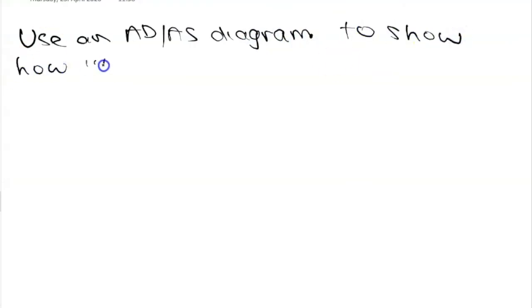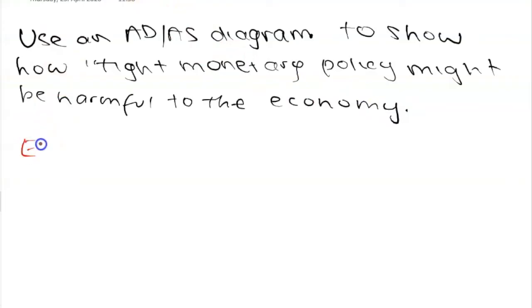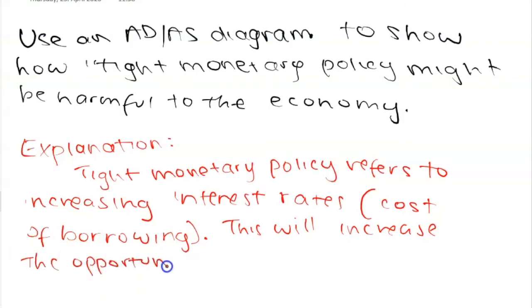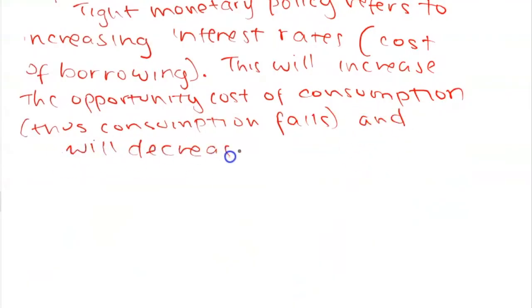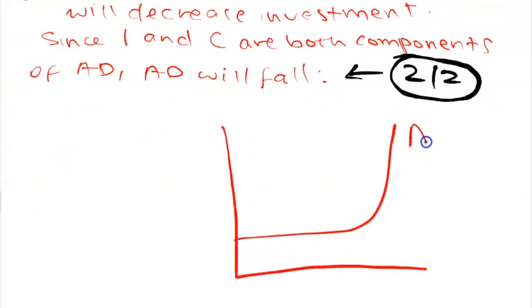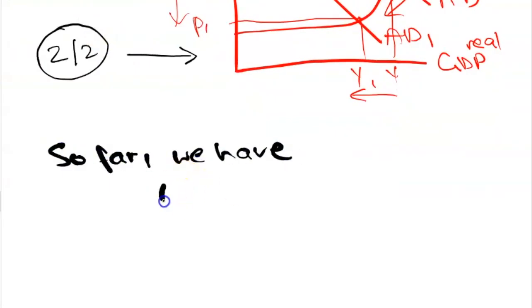The next four mark question asks us to use an ADAS diagram to explain how a decision to tighten monetary policy might be harmful to the economy in paragraph 7. First, you have to understand that to tighten monetary policy is contractionary monetary policy, in other words, to increase interest rates. You also have to understand that interest rates is the cost of borrowing or the opportunity cost of consumption. For your explanation, you would explain that this will increase interest rates, therefore decrease consumption and investment, both of which are components of AD, and therefore shift AD to the left, causing lower economic growth. For your diagram, the x-axis should be real GDP, the y-axis should be average price level, and if AD and AS are labeled correctly and you have the price and real GDP points, then there's no reason you shouldn't be getting four out of four marks for this one.